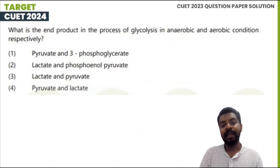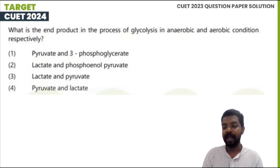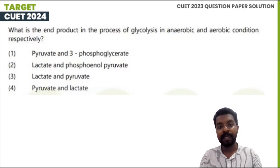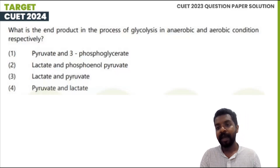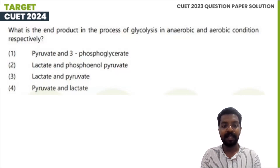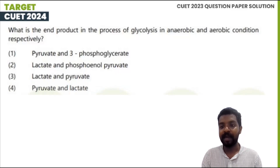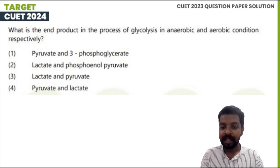What is the end product in the process of glycolysis in anaerobic and aerobic conditions respectively? In anaerobic conditions, the end product is ethanol plus carbon dioxide. In aerobic conditions, it is pyruvate. The option pyruvate and 3-phosphoglycerate — lactate and phosphoenolpyruvate are not correct. Option 3 is correct.